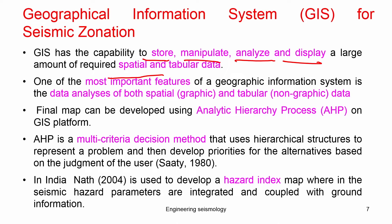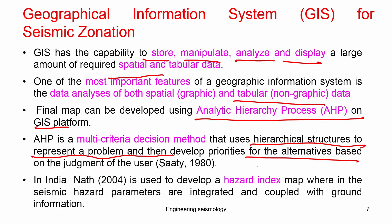One of the most important features of GIS is data analysis in both spatial and tabular form. The final map can be developed using the Analytical Hierarchy Process (AHP) in GIS. The AHP is a multi-criteria decision method that uses hierarchical structures to rank parameters based on importance and develop priorities based on the judgment of decision makers. It was developed by Saaty in the 1980s, and was first incorporated into seismic zonation work in India for the Sikkim microzonation.